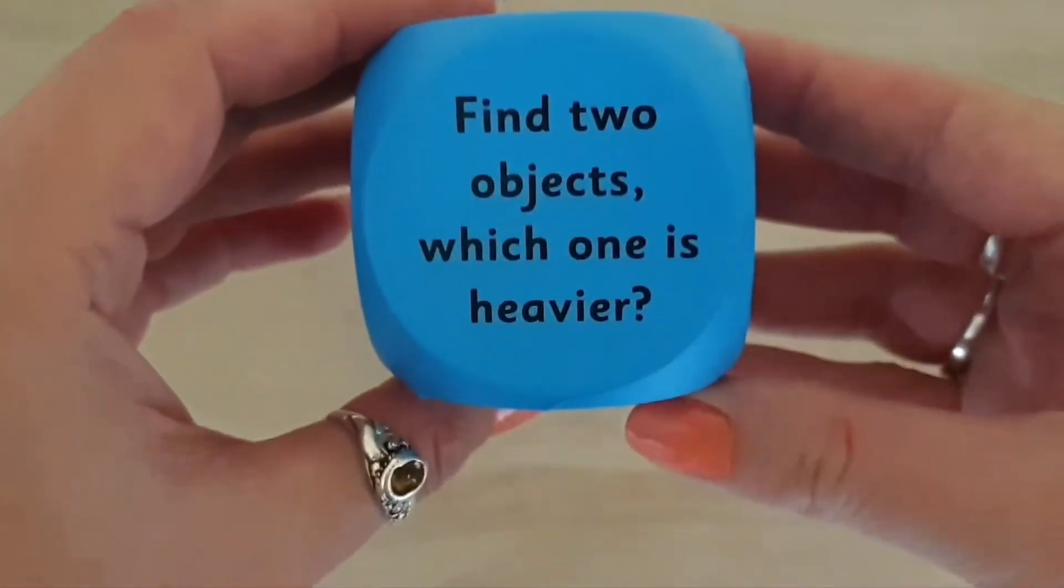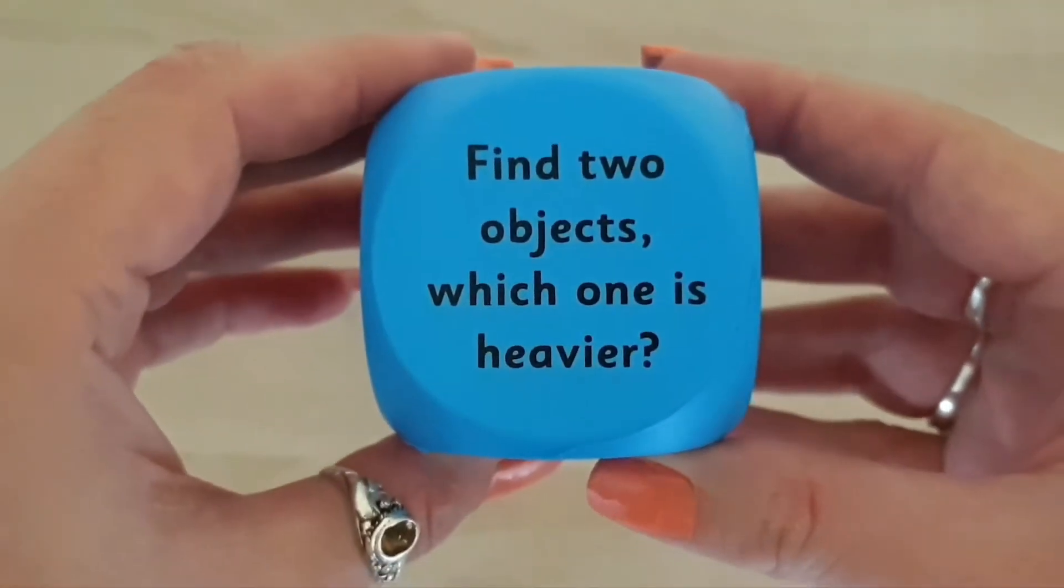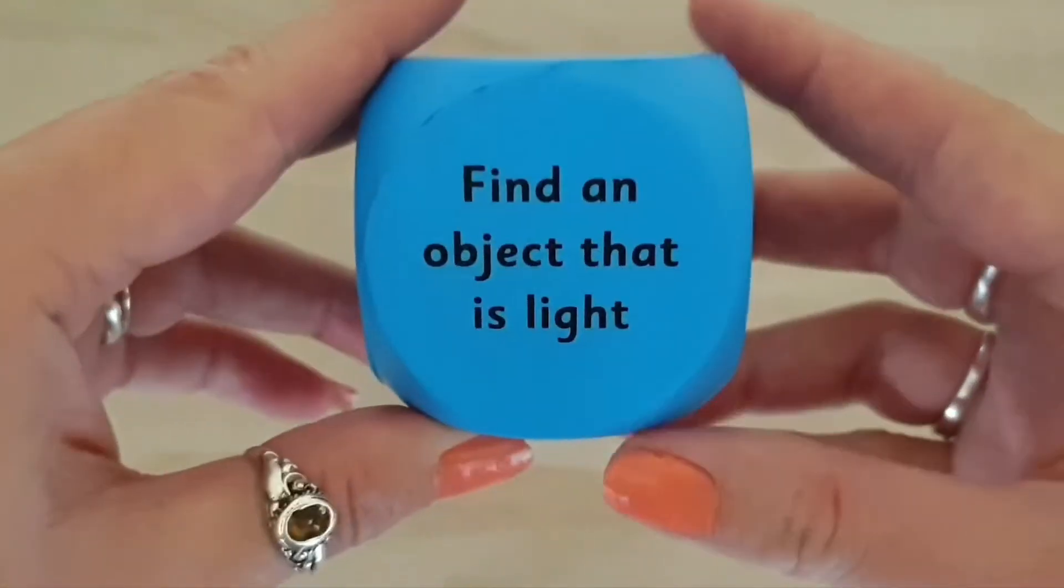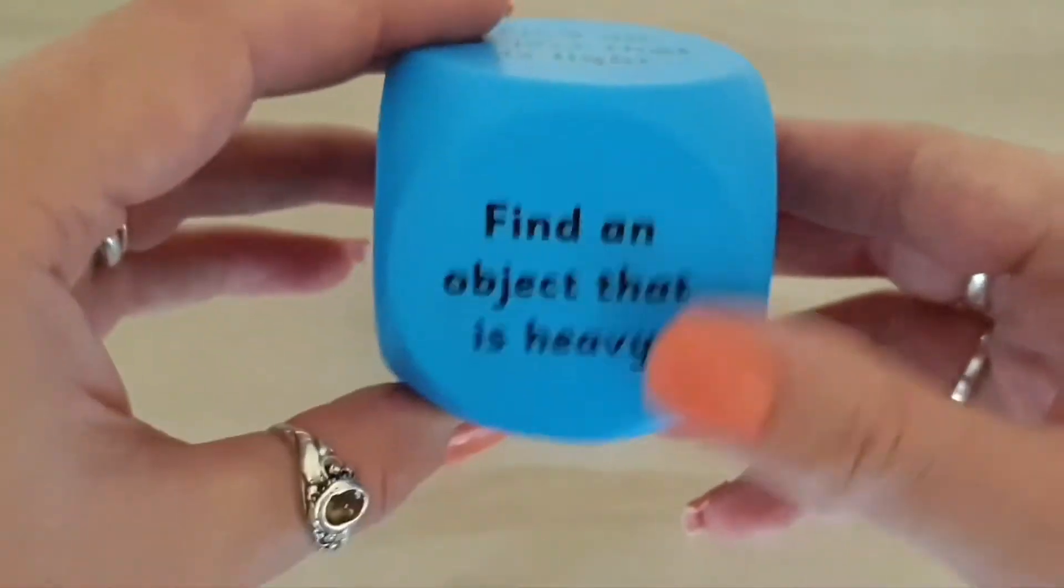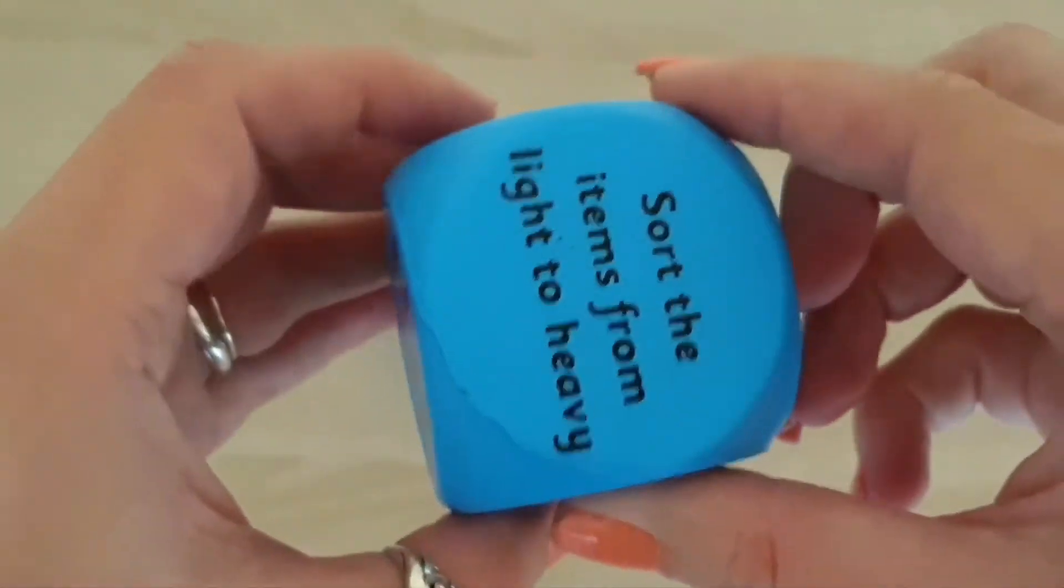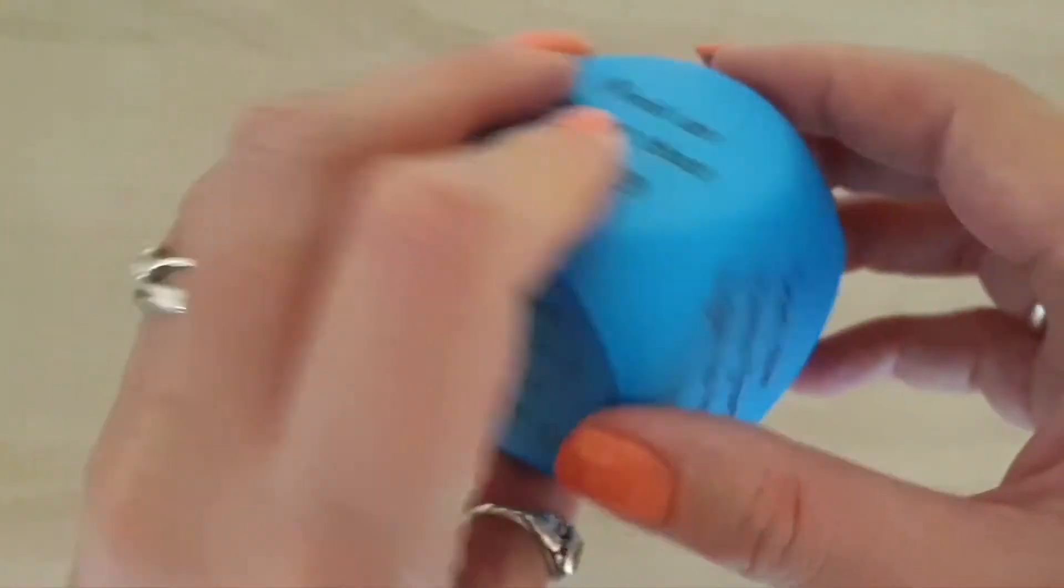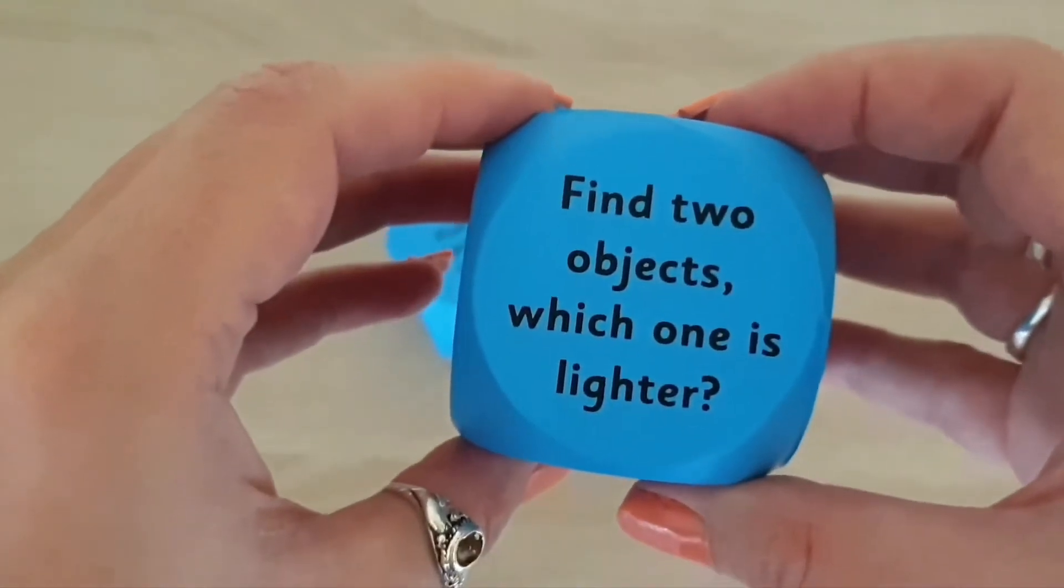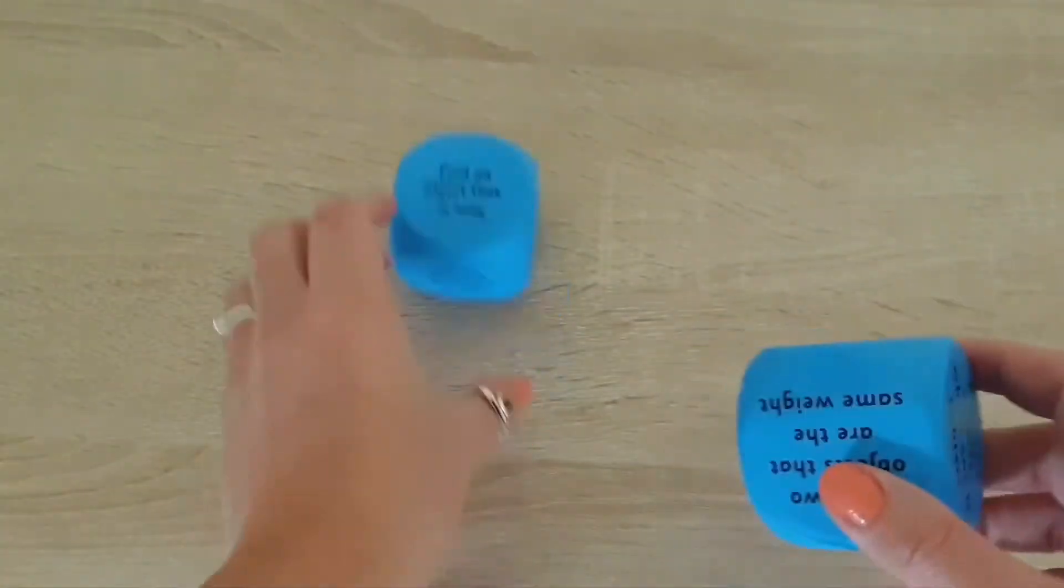This one here is all about weight, so it has questions like find two objects which one's heavier, find an object that is light, find an object that is heavy, find two objects that are the same weight, sort the items from light to heavy, find two objects which one is lighter.